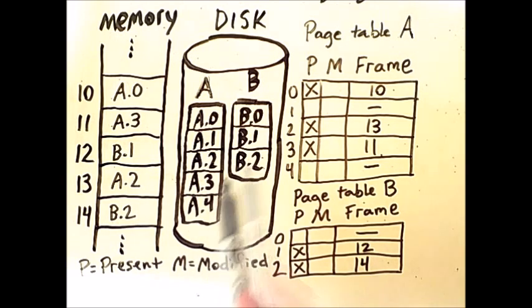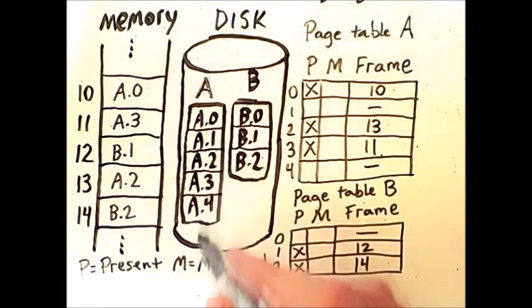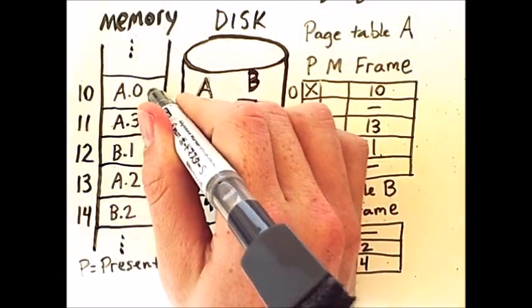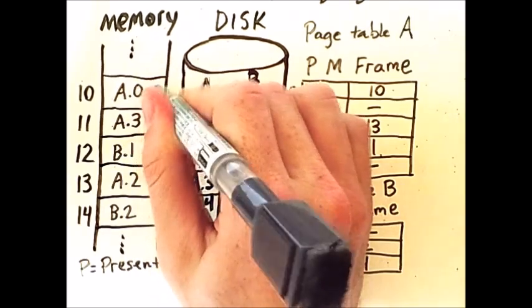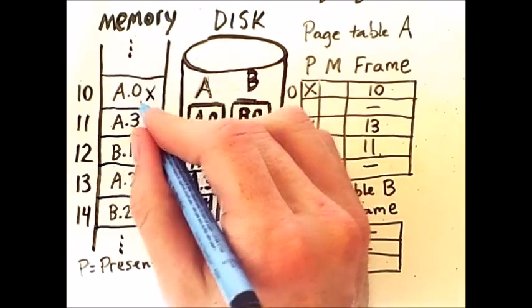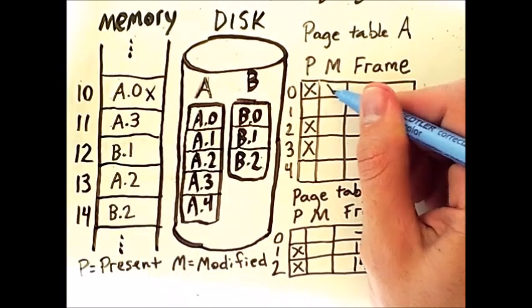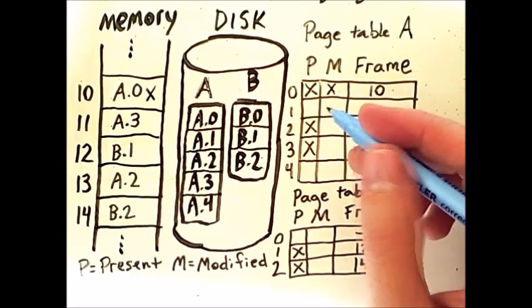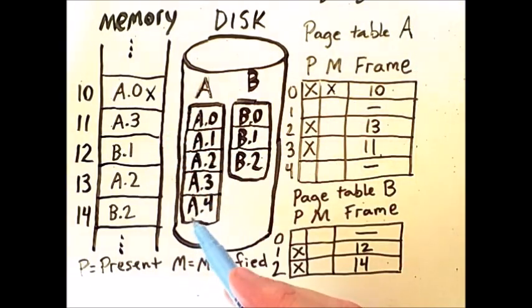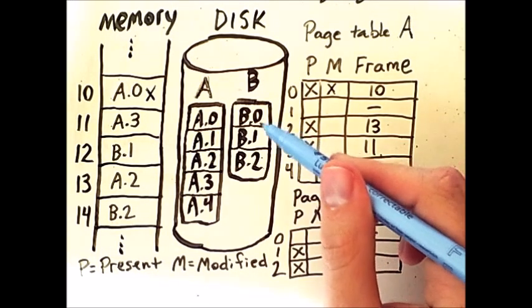Let's see what happens when these two processes run for a while and interact with each other. Let's say that page A0 contains some portion of the data for process A. A is currently executing, and so some portion of memory here gets modified. Because page A0 has been modified in memory, we mark the modified bit in the page table. As execution goes on, we will eventually give up the processor, allowing another process to execute. Let's say now that page B executes for a while.